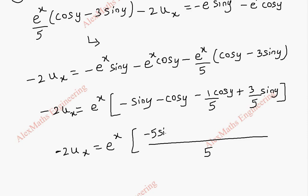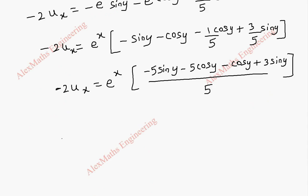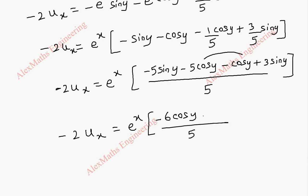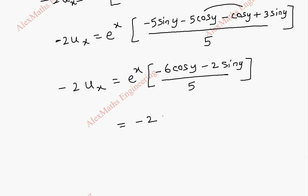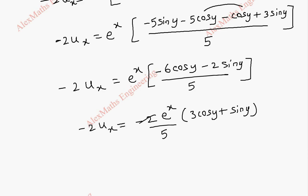This gives: minus 5 sin y minus 5 cos y minus cos y plus 3 sin y, all over 5. Adding the cos terms gives minus 6 cos y, and adding the sin terms gives minus 2 sin y. Taking minus 2 common from the numerator leaves 3 cos y plus sin y, and cancelling minus 2 on both sides, we finally get ux equals e^x divided by 5 times (3 cos y plus sin y).